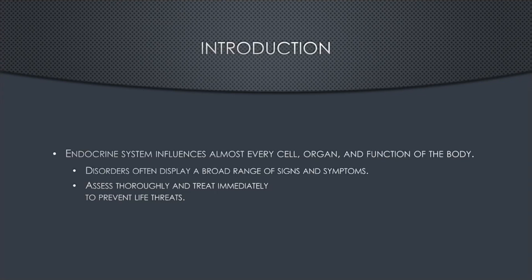Some of those glands are located near the brain, like your pituitary gland. These glands send off hormones or stimulation of hormones. Hormones stimulate other hormones, and the difference is that hormones are very similar to neurotransmitters but react a little bit slower. The endocrine system influences almost every cell, organ, and function of the body. Patients with an endocrine disorder often have a broad range of signs and symptoms, and it's going to take thorough assessment and immediate treatment to prevent a life-threatening emergency.